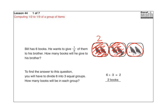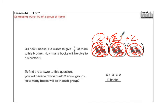If he was to give 2 thirds, he would give 2 and 2 — he would give 4. All 3 thirds are going to be 6 altogether. So you can see in each third, there are 2 books.